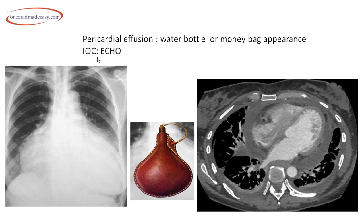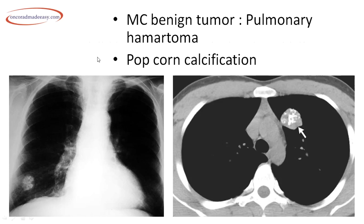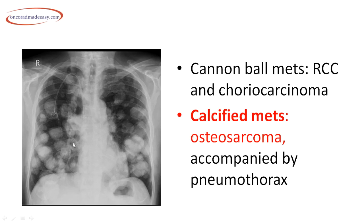The most common benign pulmonary tumor is the pulmonary hamartoma — a small nodular lesion in the right lower zone showing speckled or popcorn calcification. On CT, it appears as a well-defined rounded nodular lesion with multiple dense calcific foci giving popcorn calcification appearance, suggestive of hamartoma.